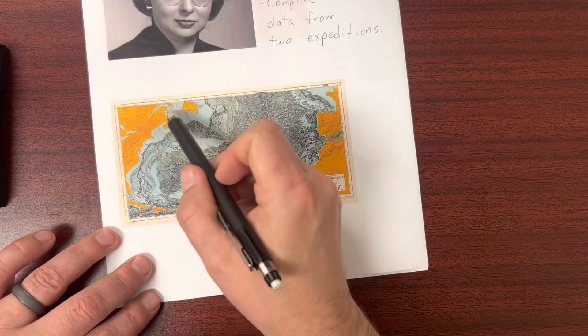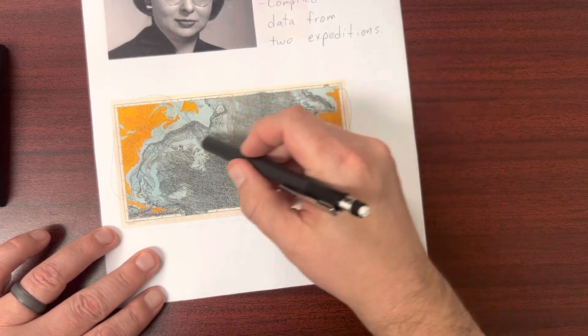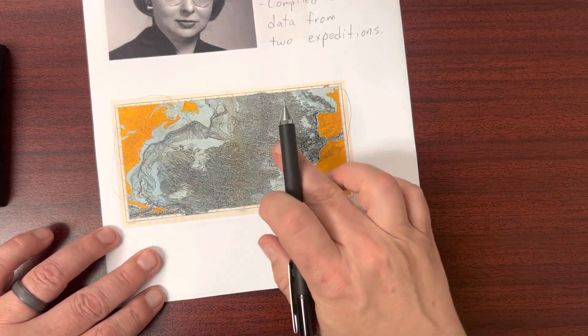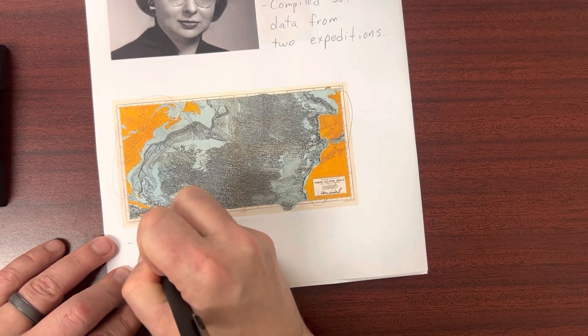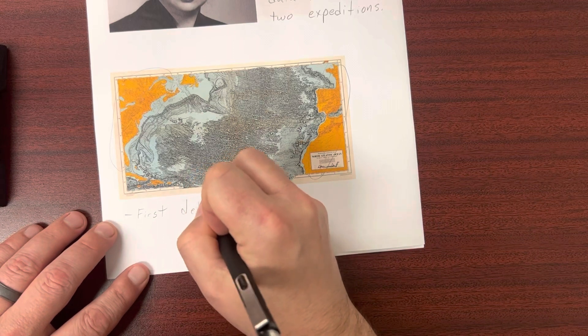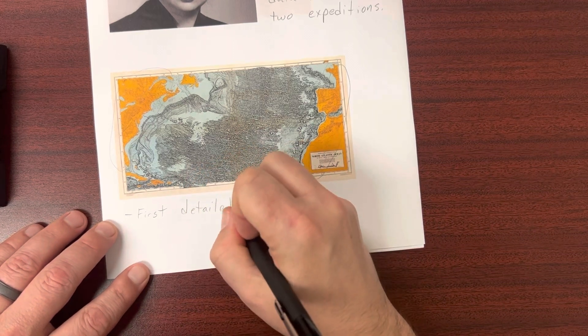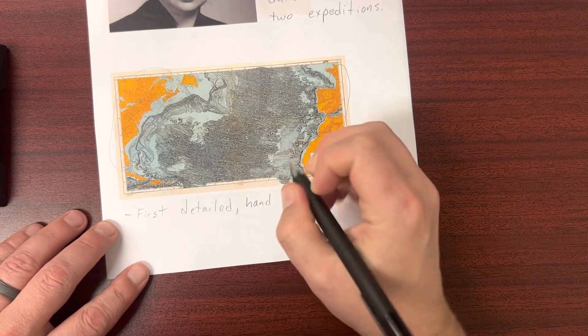So we've got North America over here, we've got Europe over here, and this is all the ocean floor of the Atlantic. So this is the first detailed map, which she hand drew, by the way.